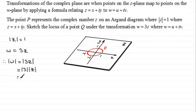What's the modulus of 3? That's just simply 3, and the modulus of z is 1. So you've got 3 times 1, which is 3. So the modulus of w equals 3.